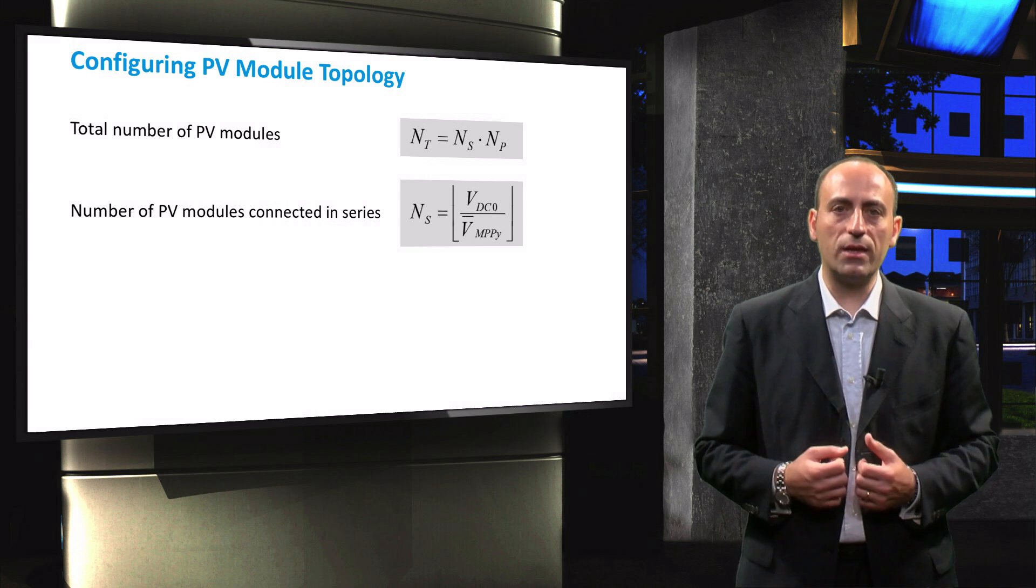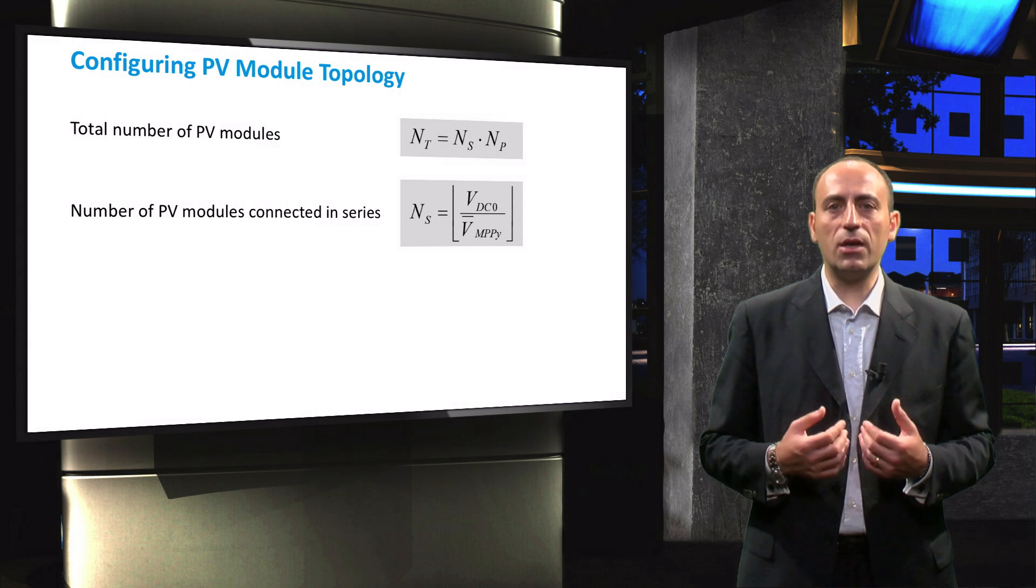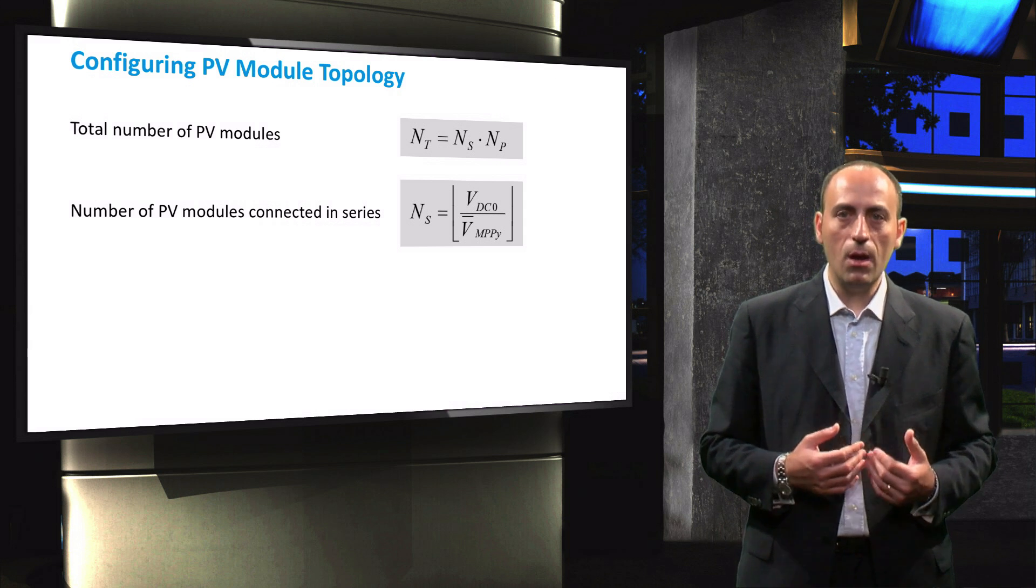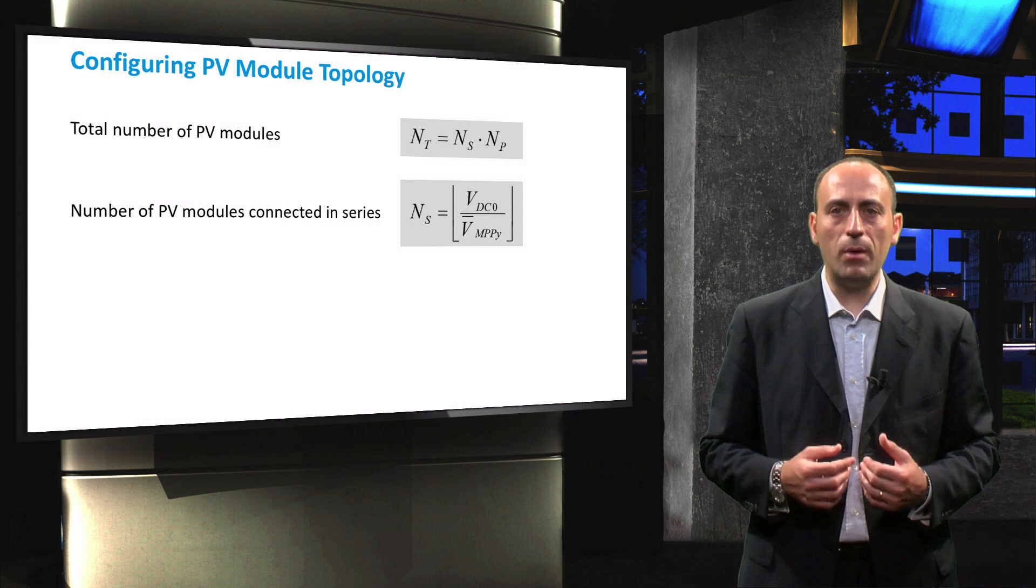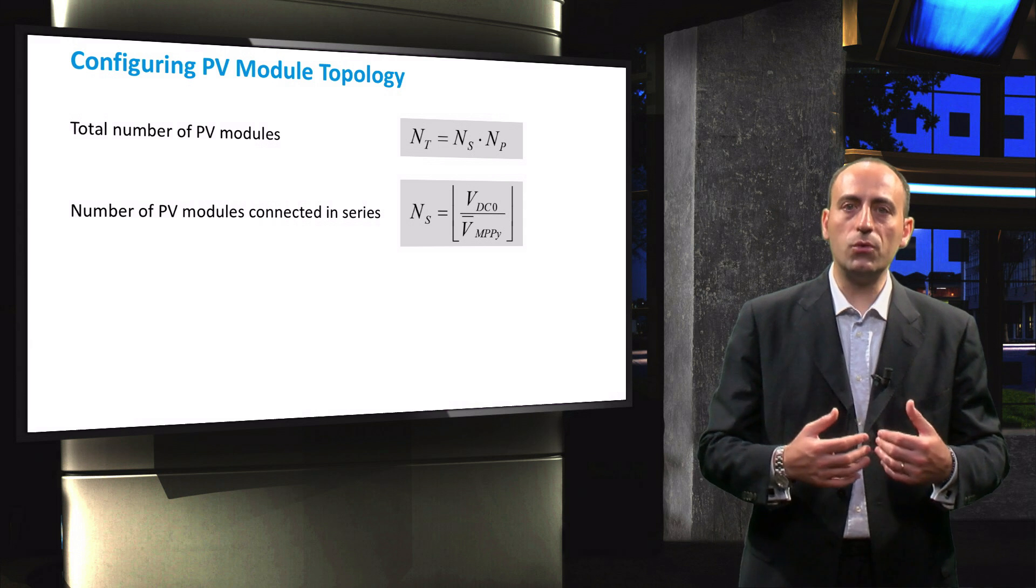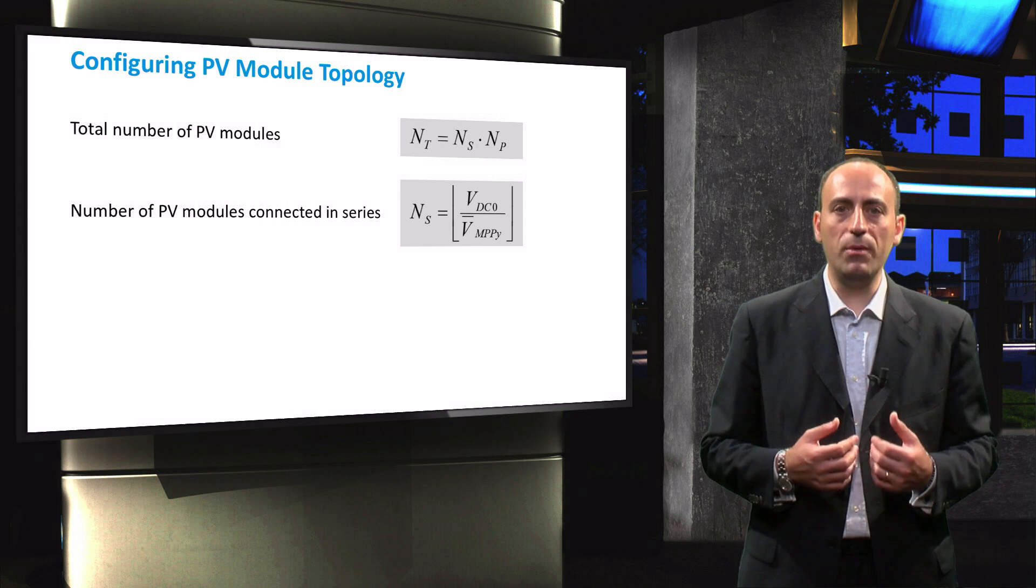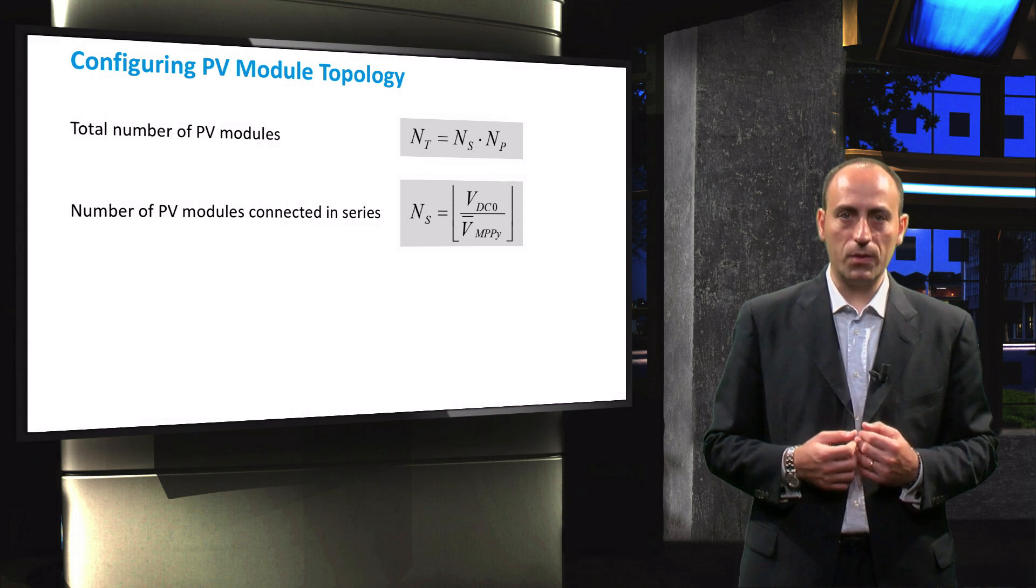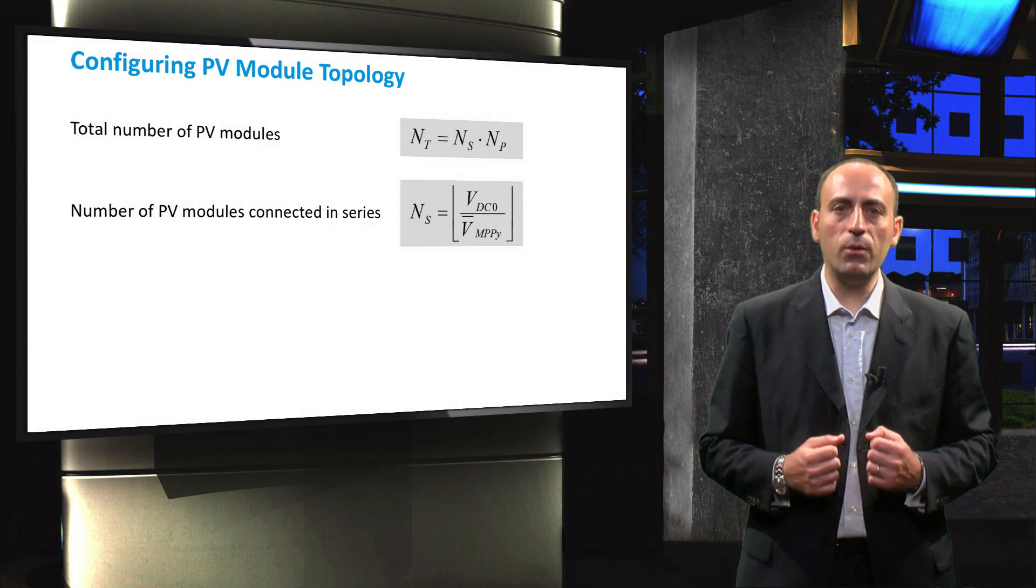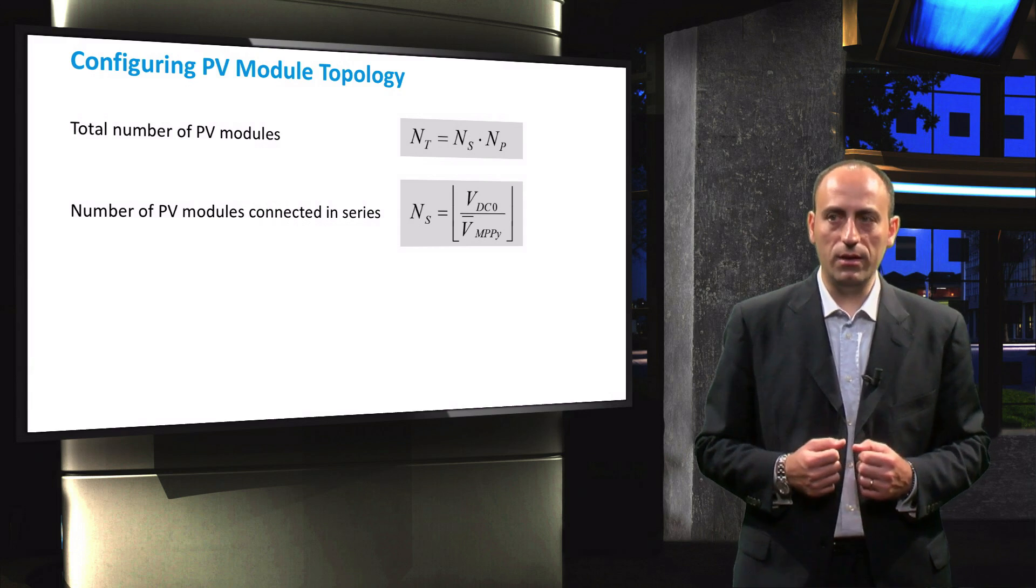The number of series-connected modules, NS, is calculated by dividing the nominal DC voltage of the inverter by the averaged maximum power point voltage of the PV modules. You learned how to calculate this averaged MPP voltage in the previous video. Note that the NS value is obtained by rounding down the calculated value to its nearest integer.